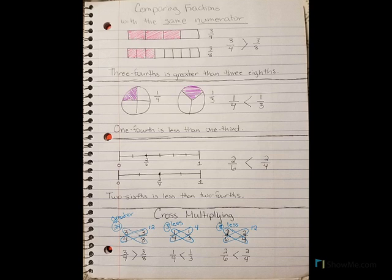So this is what your notes should look like in the end — we have all four sections full. Remember that when we're comparing fractions with the same numerator, the denominator is the really important one to look at. The more pieces your fraction is broken into, the smaller they get. So when you have the same amount of pieces but your sections are smaller, that one is going to be less. And remember that you can use cross-multiplying as another way to verify which fraction is less than or greater than. Make sure you answer your reflection question, and make sure you watch the video one more time after copying your notes. Bye!